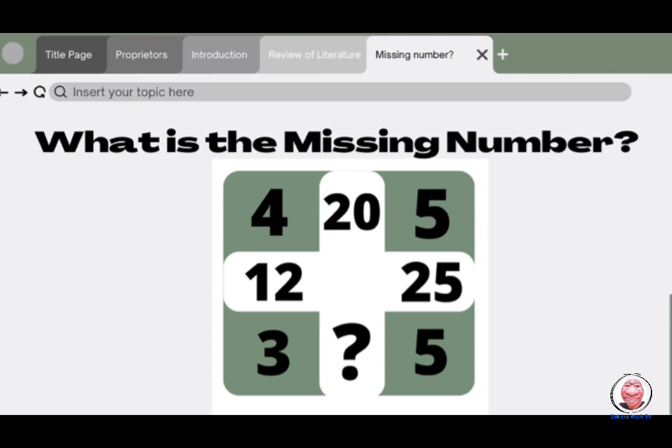First step to solve this is we need to look at the numbers outside the cross, which is 4 in the upper left and 5 at the upper right, 3 in the lower left and 5 in the lower right. Between the 4 and the 5 there is 20 in the middle. Looks familiar. And between the 4 and the 3 there is 12. And between the 5 and the 5 there is 25. Looks familiar. Did you see the clue? Now we will show you how to get the number inside the cross.